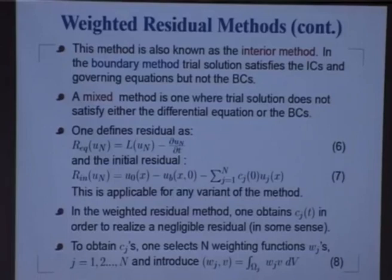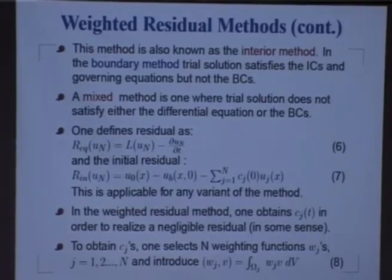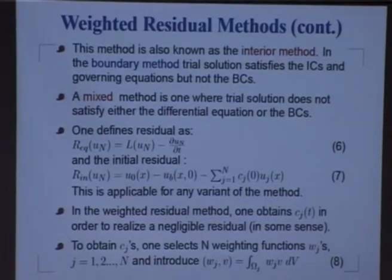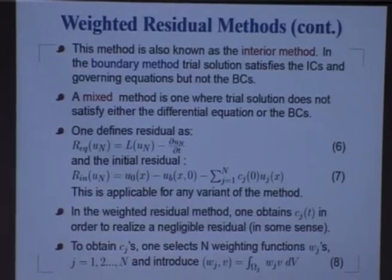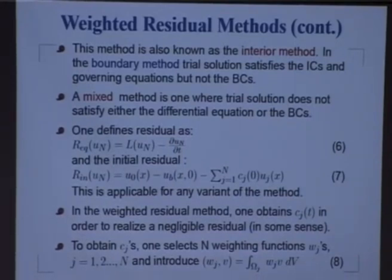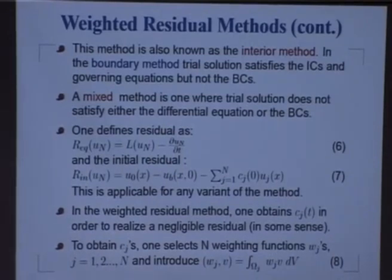Now, we did not say anything about what c_j of t is going to be. What we are going to do is try to find c_j of t by looking at the residue — and looking at the residue means we have to basically minimize this residue in some sense. We need to minimize this residue to some negligible value in some sense, and then we try to find out what the functions c_j of t are.